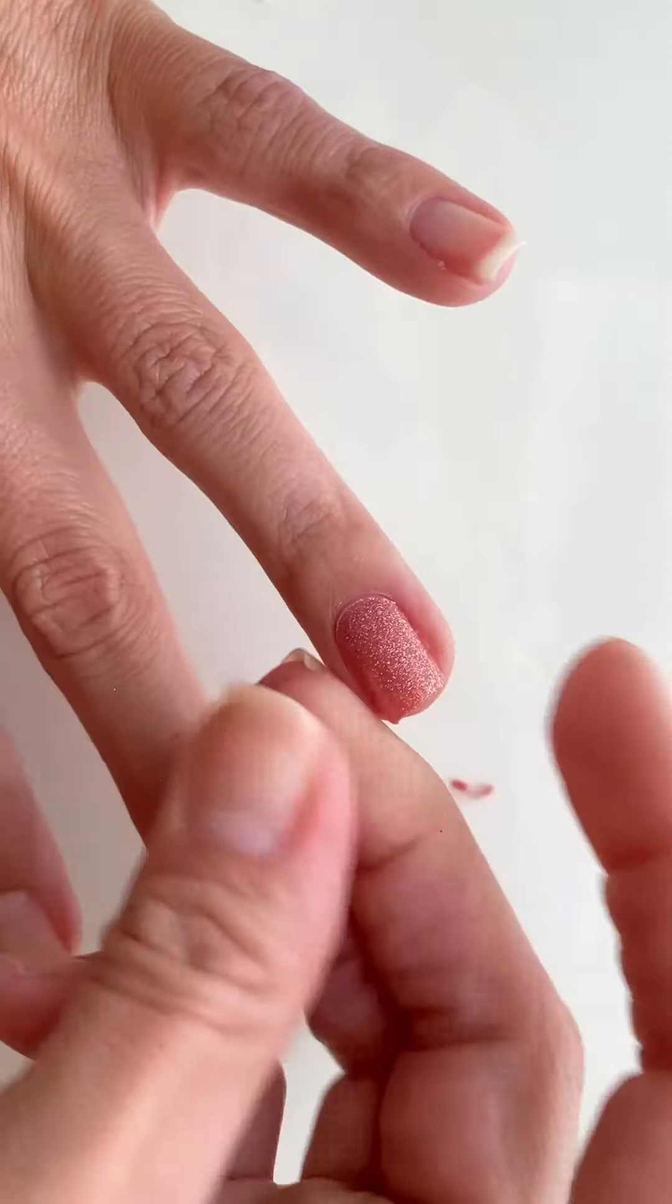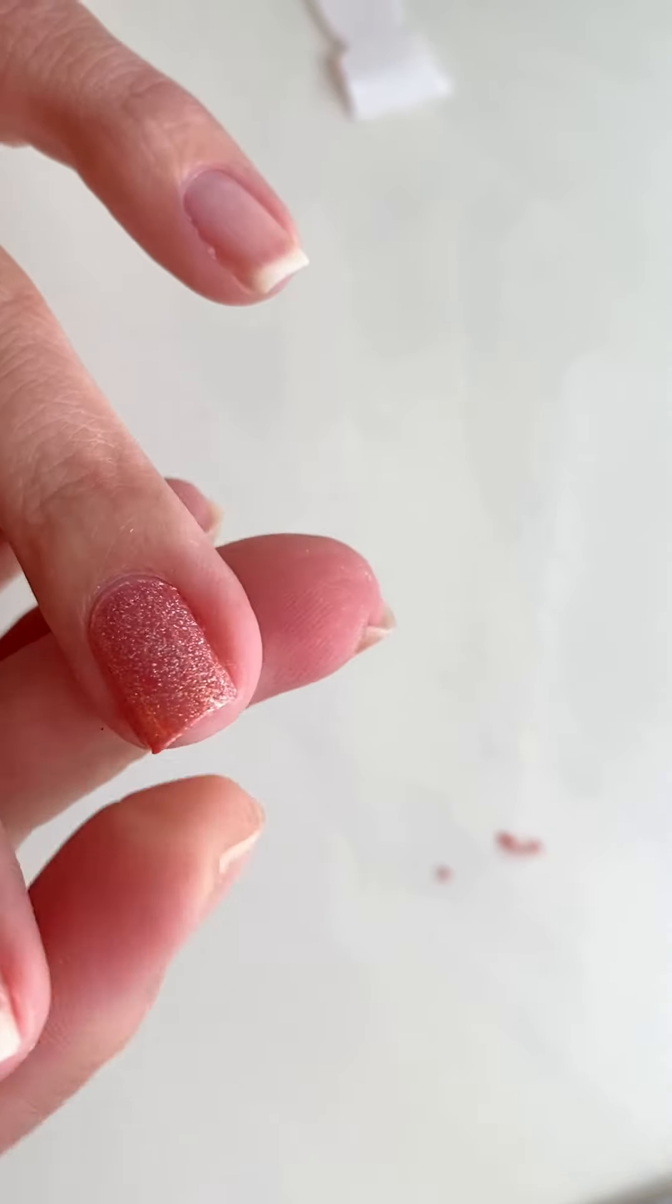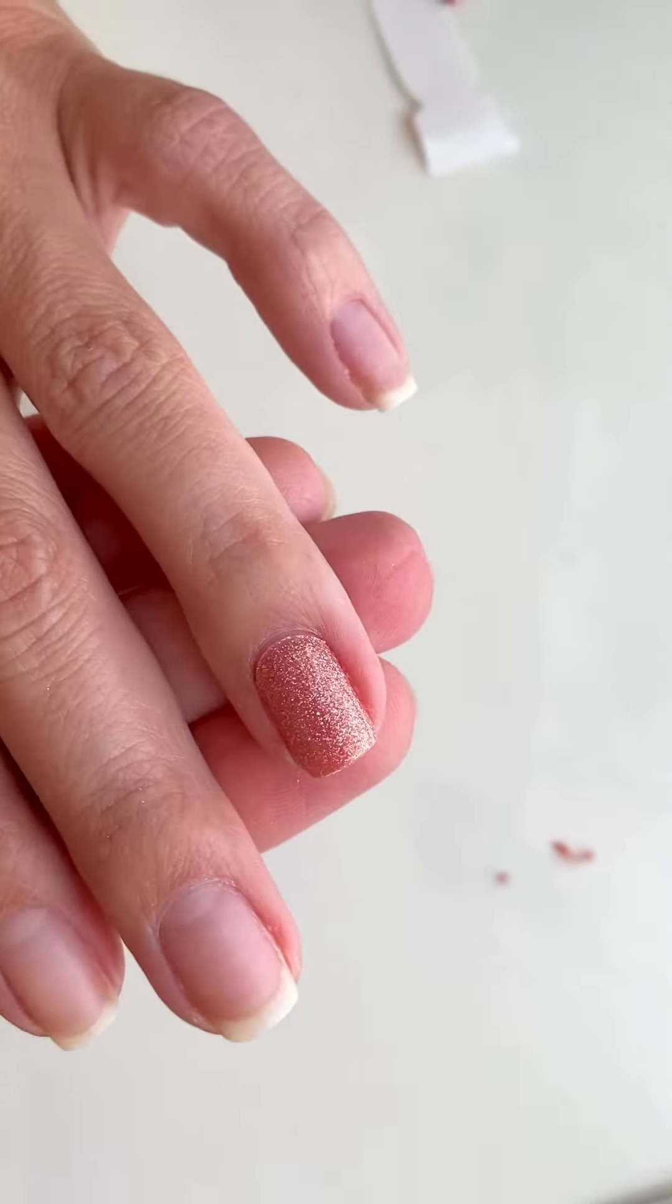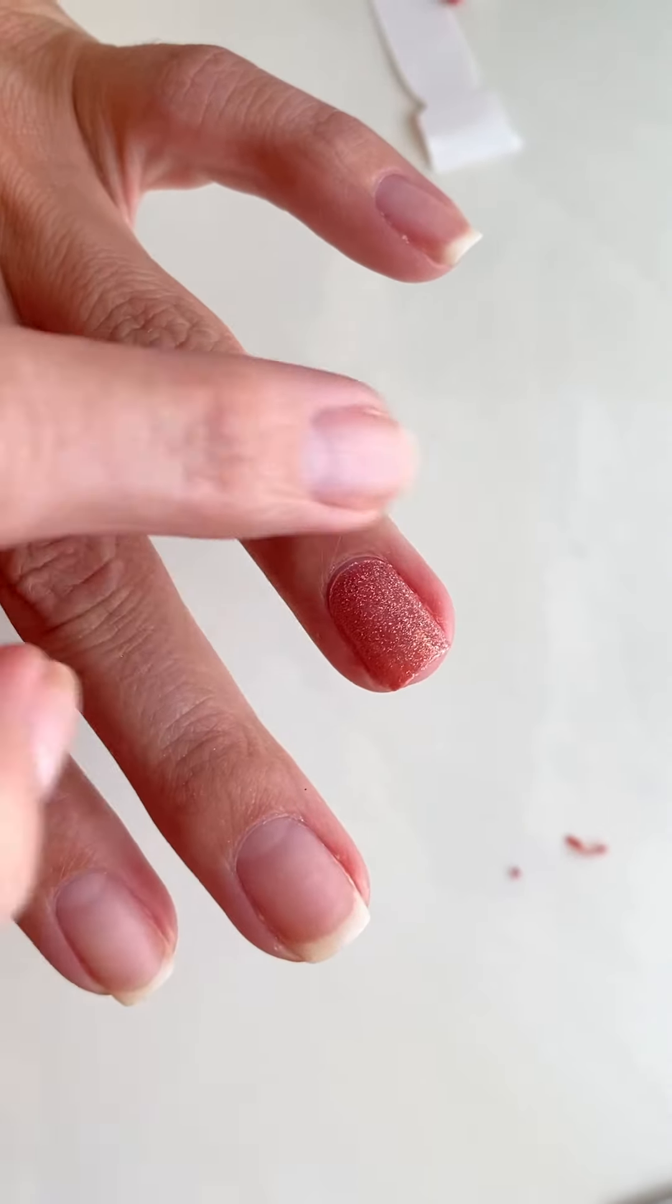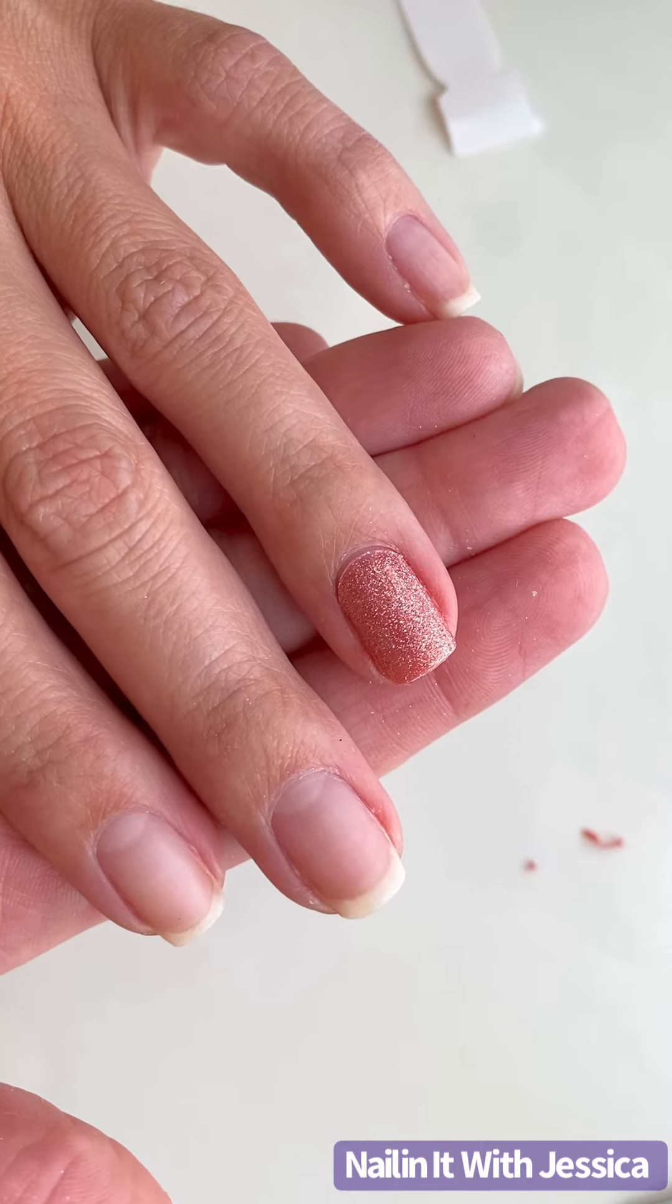And see, voila, beautiful layered nail strip, no excess on the side. I got it off, lined it up at the cuticle, and it is good to go. Hope that helps.